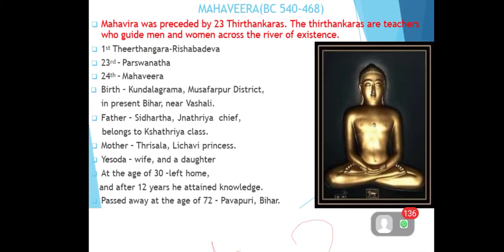Here you can see the picture of Lord Mahavira, who was born in 540 BCE and died in 468 BCE. Mahavira was preceded by 23 Tirthankaras, meaning Lord Mahavira was the 24th Tirthankara. Tirthankara means guru — just like we have 10 Gurus in Sikhism. The first Tirthankara was Rishabh Dev, the 23rd was Parshavanath, and the 24th was Lord Mahavira.